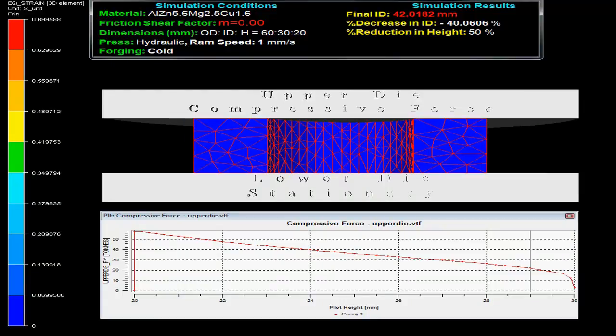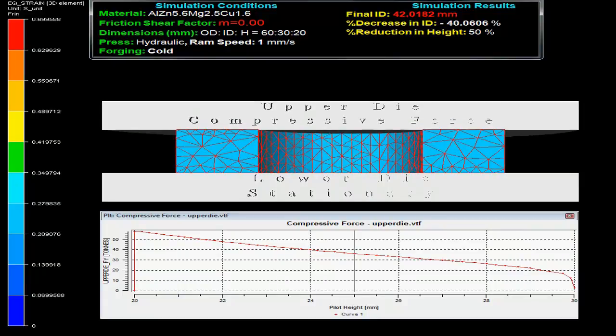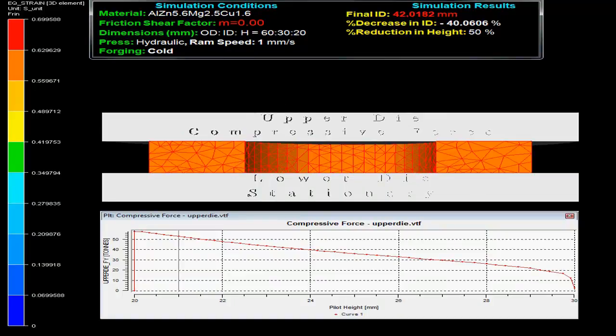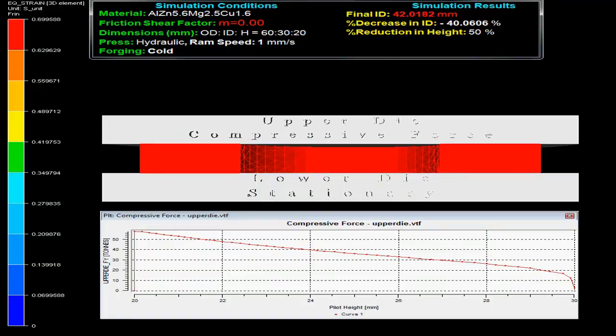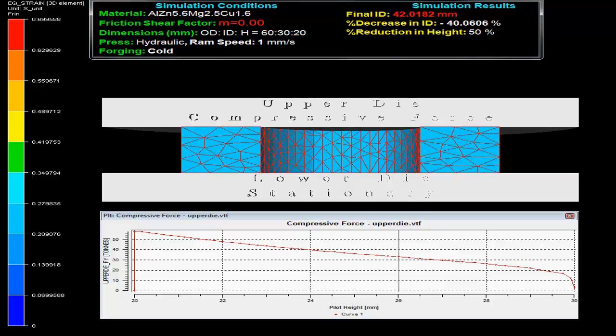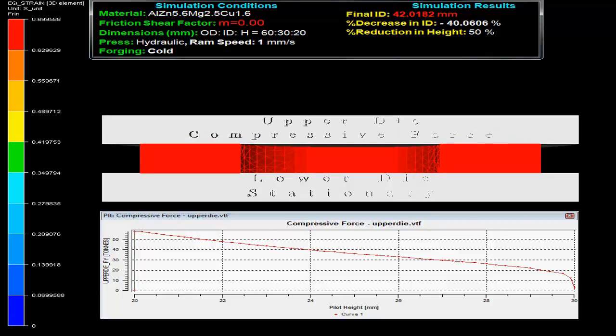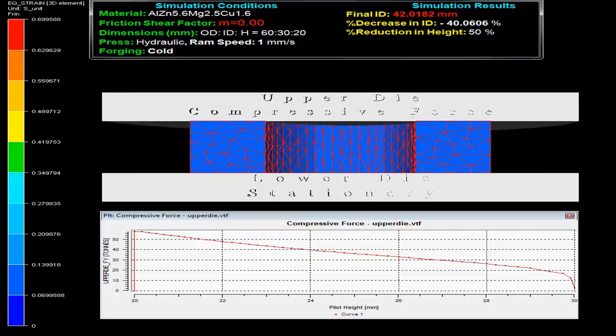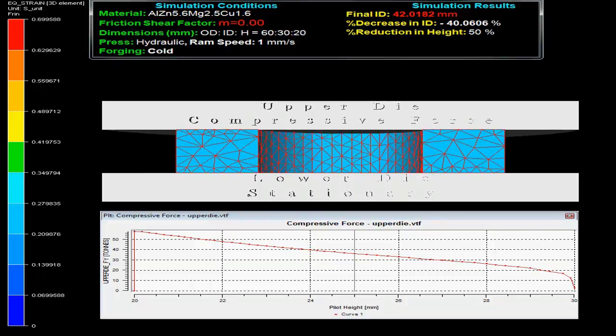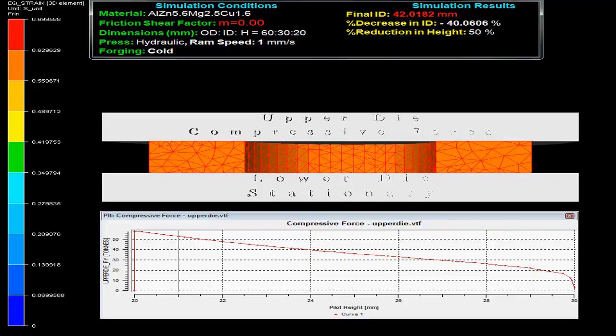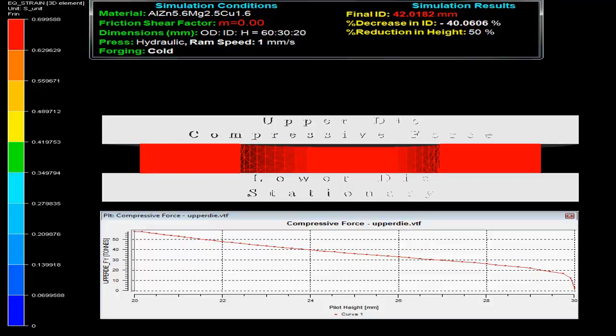The press uses hydraulic ram with speed 1 mm per second and forging is done cold. On the top right side, simulation results show the final inner diameter as 42.01 mm with a decrease in inner diameter by 40.06% on 50% reduction in height.